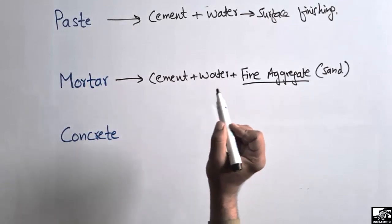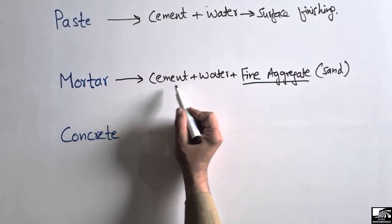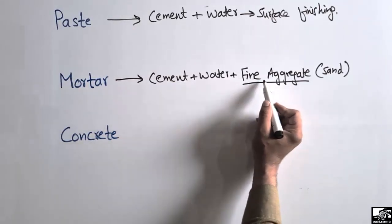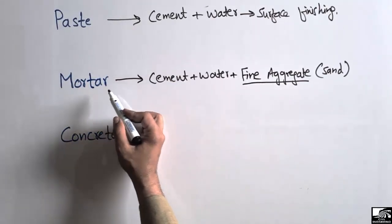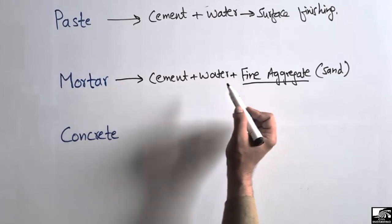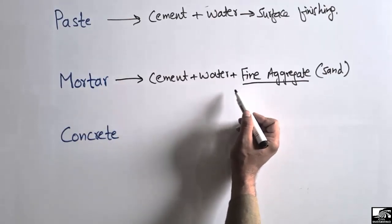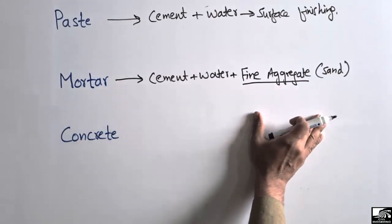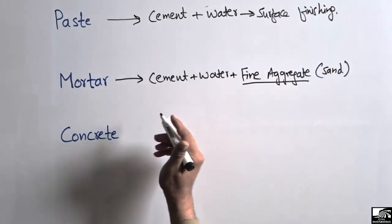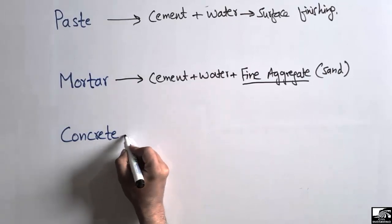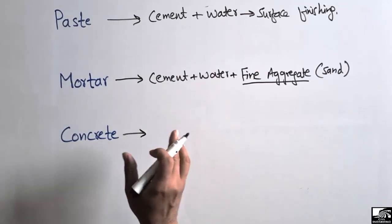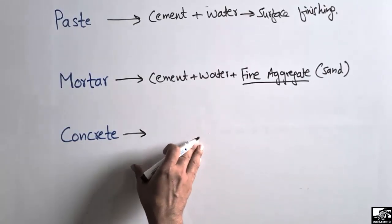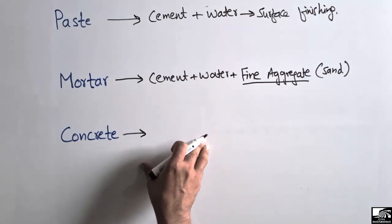The combination of cement, water, and fine aggregate makes mortar, and mortar has higher strength than paste. Mortar is also used for plastering or surface finishing purposes.